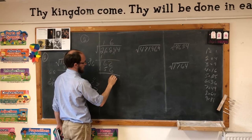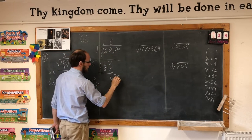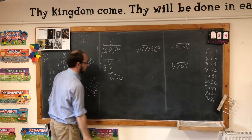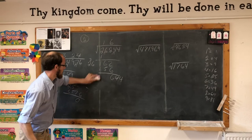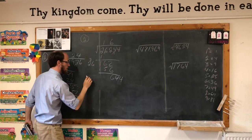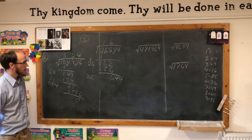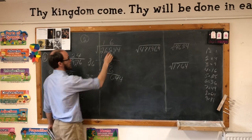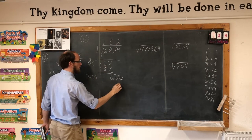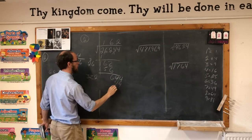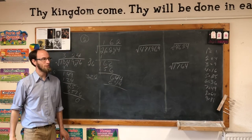We'll bring down the 44. Now take our 16 and multiply times 2: 16 times 2 is 32. 32 goes into 644 — how many times? Let's try 2 times. Put our 2 here and our 2 here. 2 times 2 is 4, 2 times 2 is 4, 2 times 3 is 6, giving 644. Worked out perfectly.